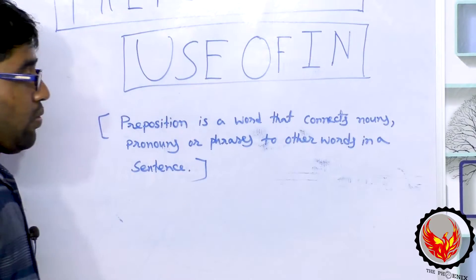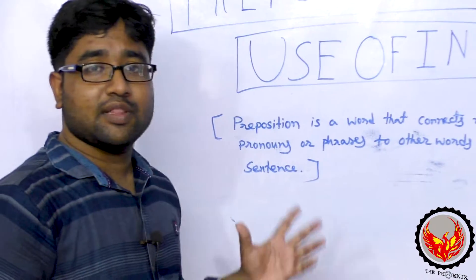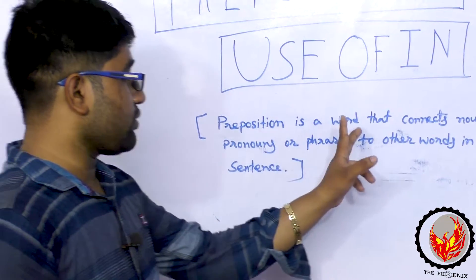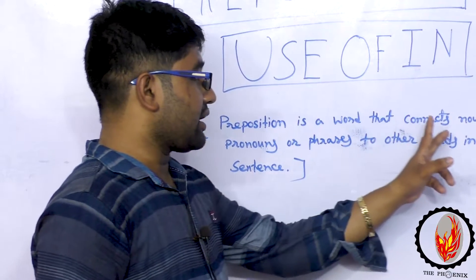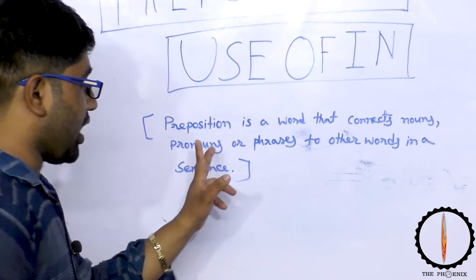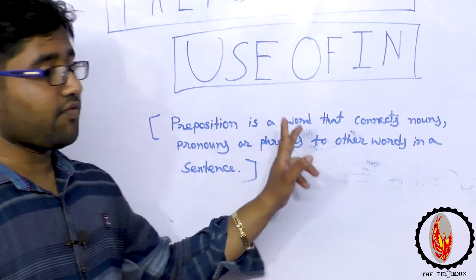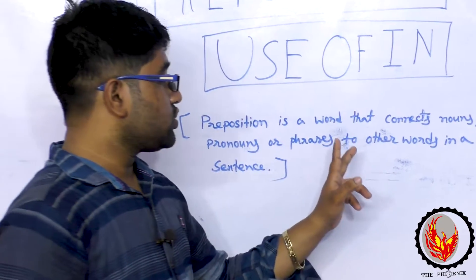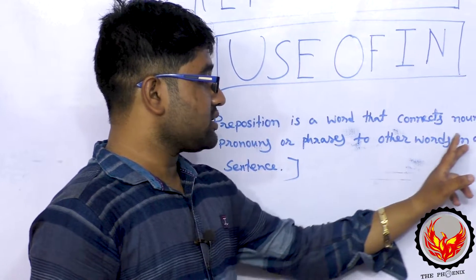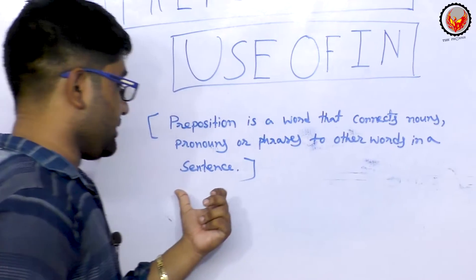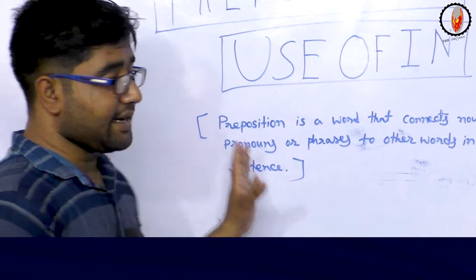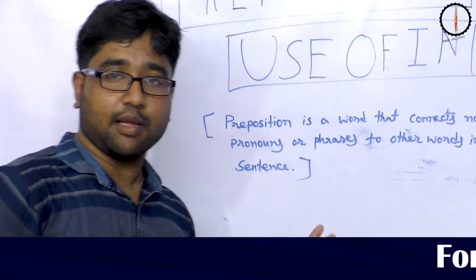So what will be the definition? A preposition is a word that connects nouns, pronouns, or phrases to other words in a sentence. That's the definition of a preposition.